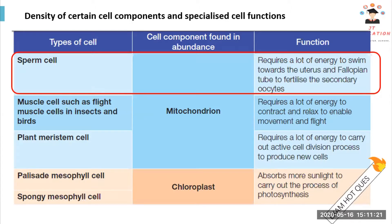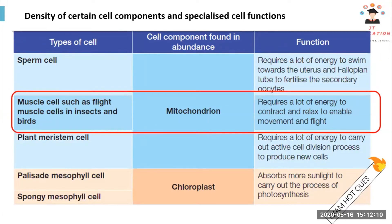In sperm cells, muscle cells, and plant meristem cells, a lot of mitochondria are needed. The function of mitochondria is to generate energy in ATP form. Sperm cells need a lot of energy to swim towards the uterus and fallopian tube to fertilize the secondary oocyte. Muscle cells in insects and birds also have a lot of mitochondria because flying requires a lot of energy — they contract and relax to enable movement and flight.